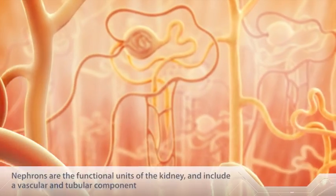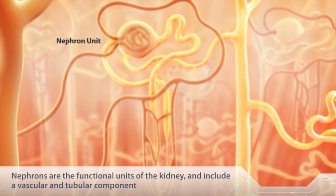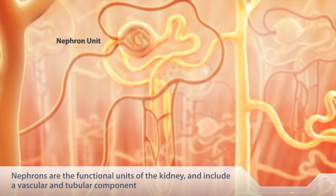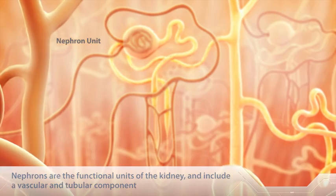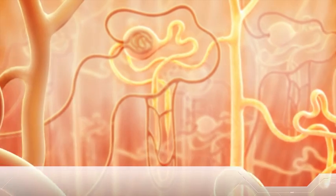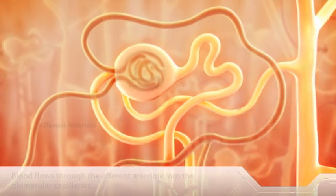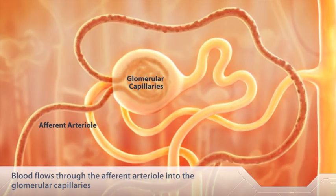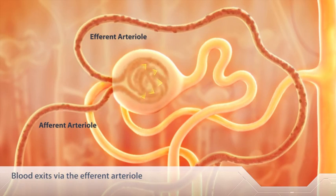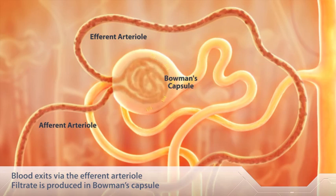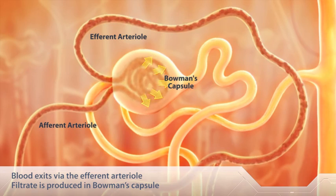Nephrons are the functional units found in the kidney and include both a vascular and tubular component. Blood flows through the afferent arteriole into the glomerular capillaries and then exits via the efferent arteriole. Filtrate is produced in an area known as Bowman's capsule.